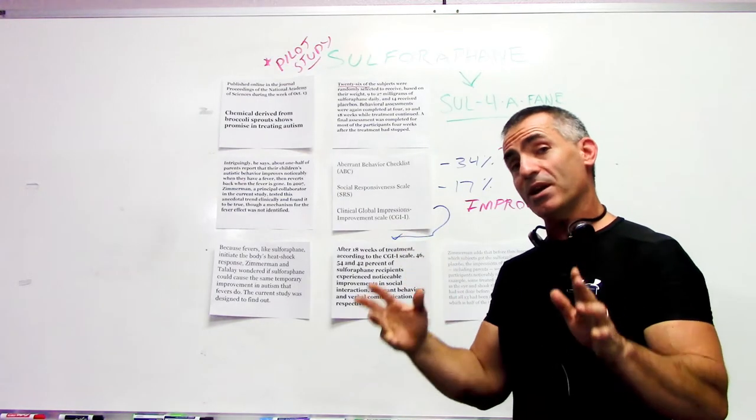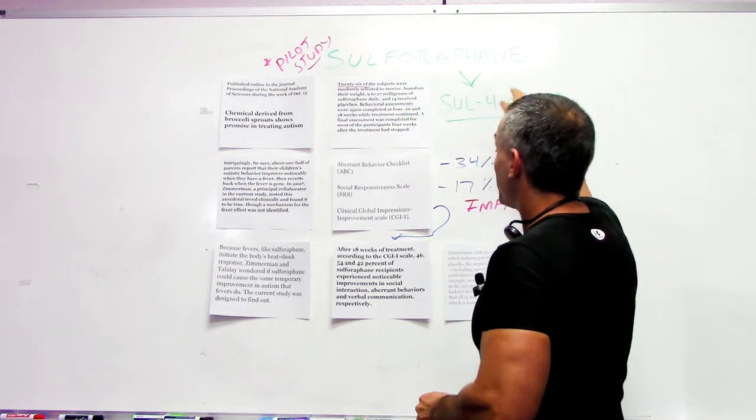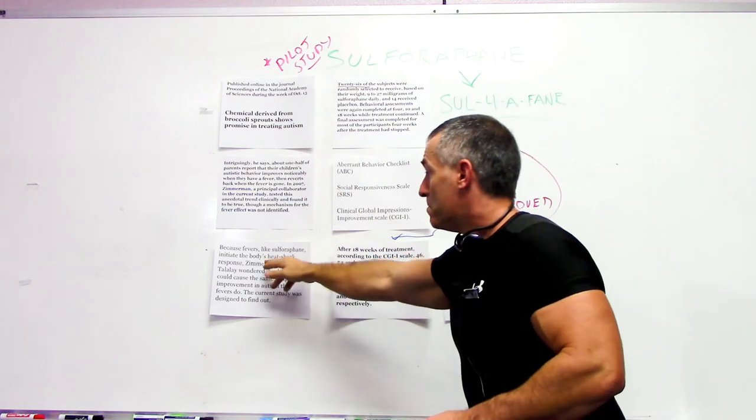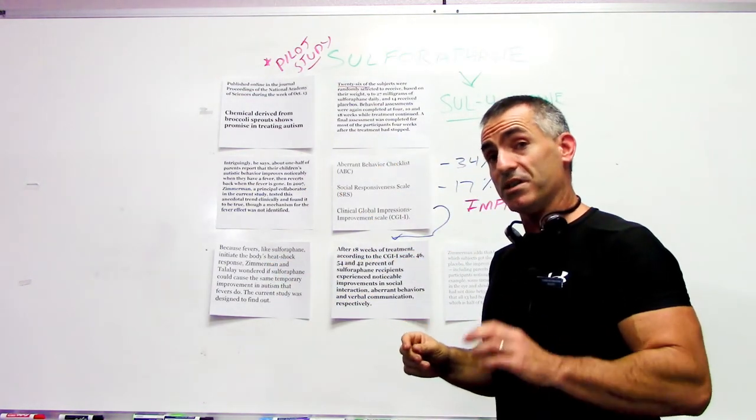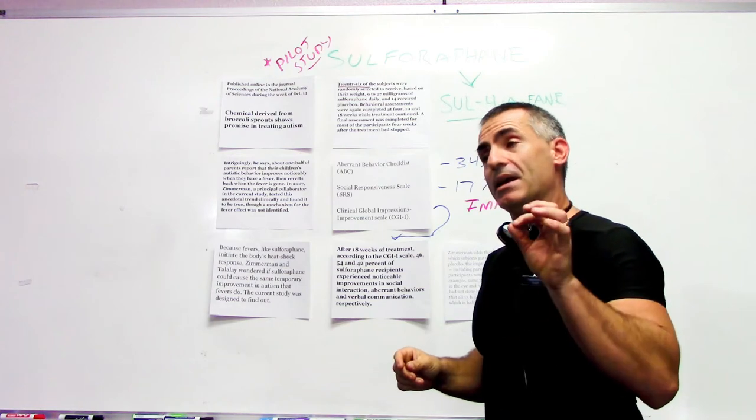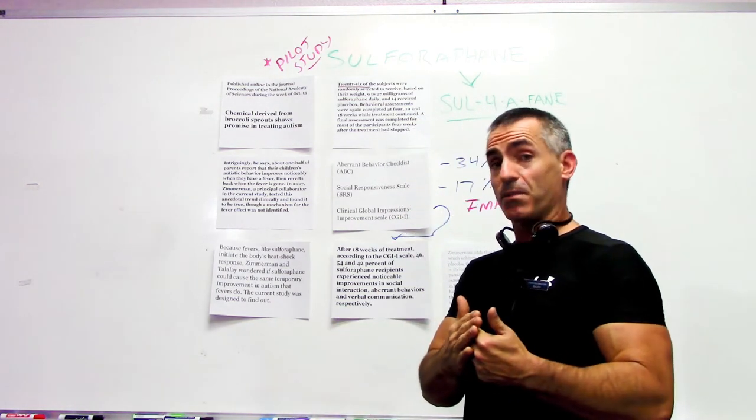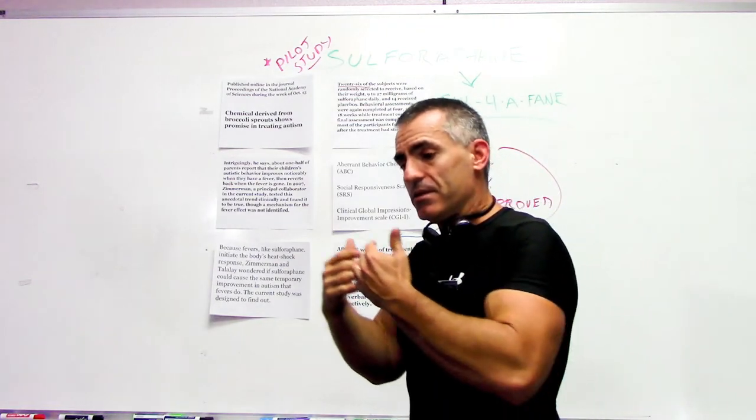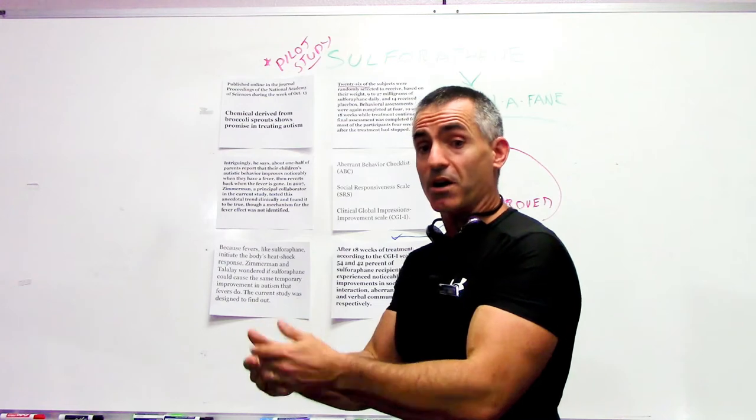So this is what also happened too, which is interesting. We got it down that sulforaphane somehow mimics a fever response, and all the children began to improve in the symptoms of autism. Now keep in mind, when they removed the broccoli sprouts from the study, these symptoms began to get worse again, or return to the way they used to be prior to the trial.